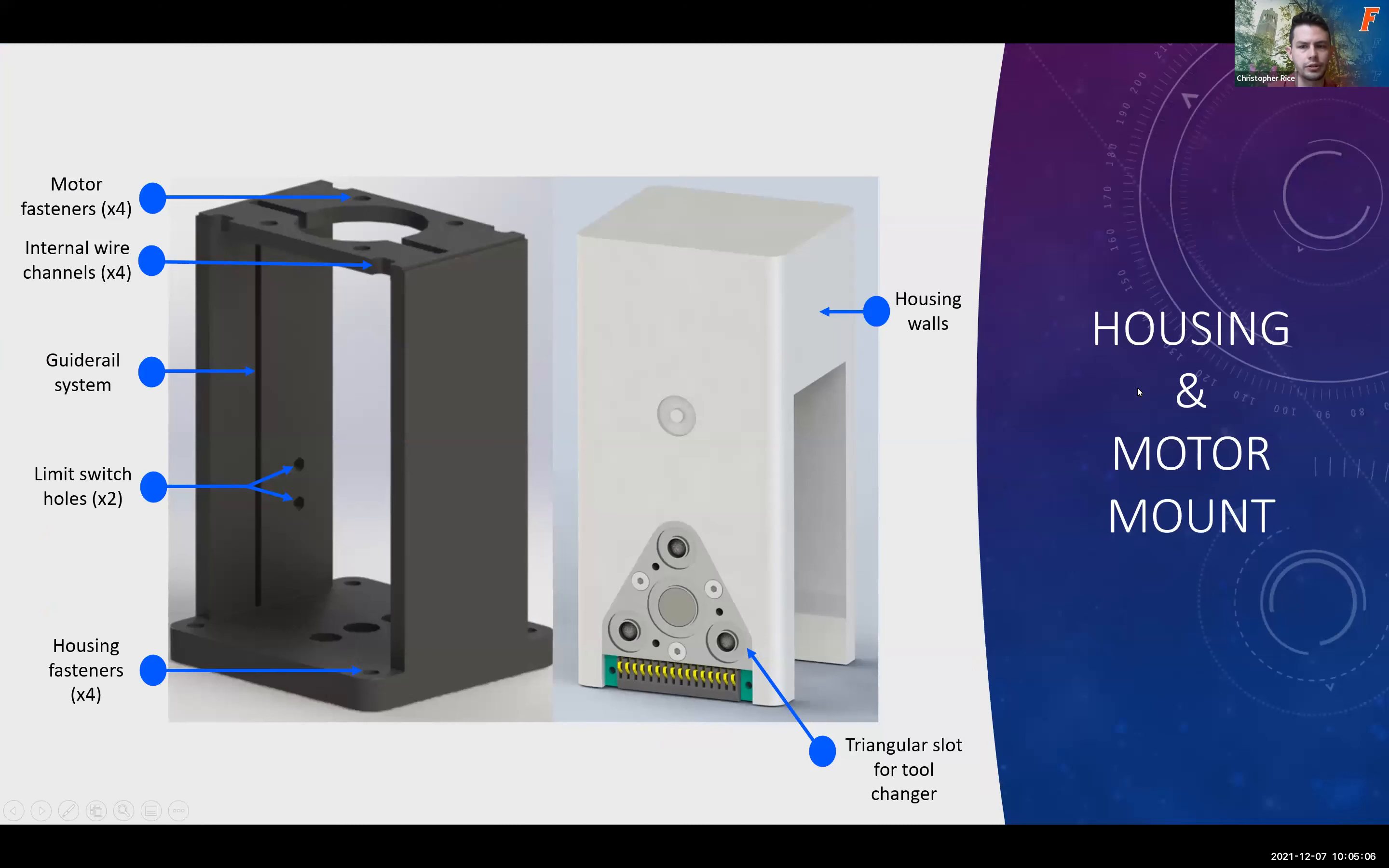Pictured here is the final design for the housing and motor mount. Some of the key features: we have four holes which were for the motor fasteners, to safely secure the motor to the motor mount without it falling off during testing. Underneath that we have four internal wire channels located at each corner of the top of the motor mount to make sure that the wires were out of the way from any moving mechanisms internally. This connected the limit switch to the motor and the tool changer. We also have two guide rail systems, one on each side of the motor mount wall, to help turn the rotational motion into linear motion during testing.